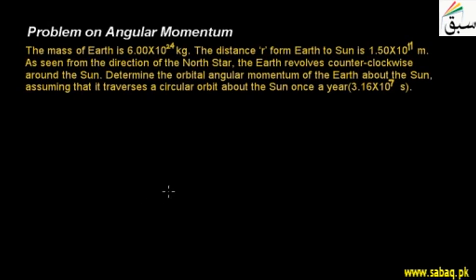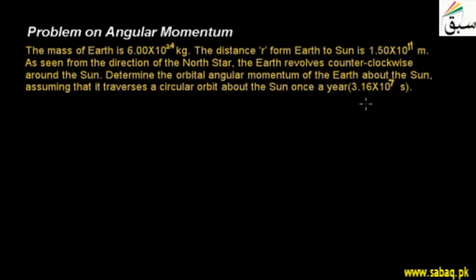We will discuss the problem of angular momentum. The mass of Earth is 6.00×10²⁴ kg, and the distance R from the Earth to the Sun is 1.50×10¹¹ meters. As seen from the direction of the north star, the Earth revolves counterclockwise around the Sun. We have to determine the orbital angular momentum of the Earth about the Sun when it revolves around the Sun once a year, following a circular path for 3.16×10⁷ seconds.